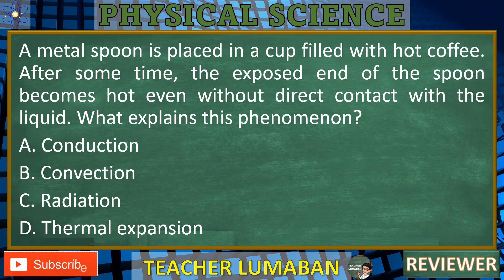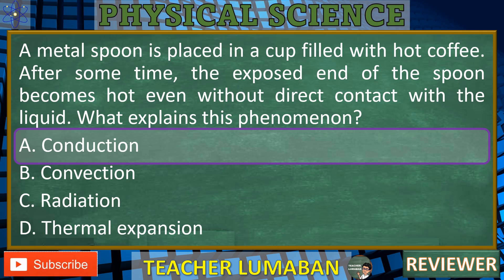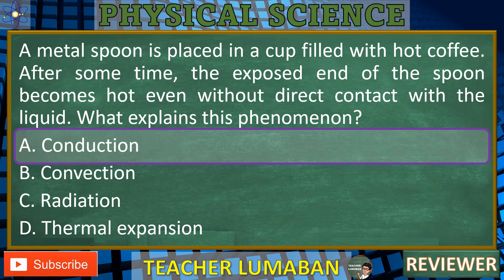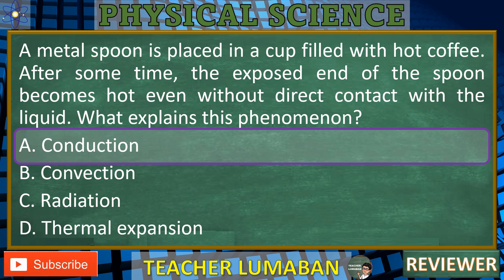The phenomenon where the exposed end of the metal spoon becomes hot after being placed in a cup of hot coffee is explained by A. Conduction. Conduction is the process of heat transfer through a material without the material itself moving. The metal spoon conducts heat from the hot coffee through the spoon's material to the exposed end. Metal is a good conductor of heat, so the thermal energy travels along the spoon, causing the end not in contact with the coffee to become hot. This process does not involve the movement of liquid (convection), electromagnetic waves (radiation), or expansion of the material (thermal expansion).